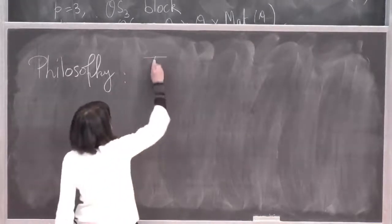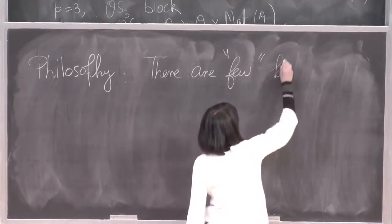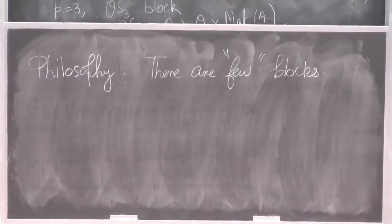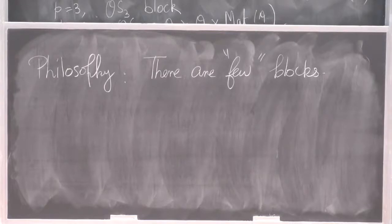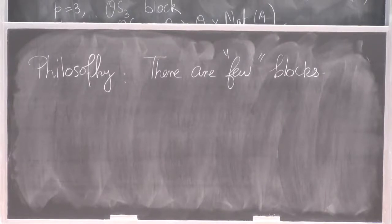The philosophy is that there are only a few blocks. 'Few' means different things to different people. In terms of representation theory: you can always find another block algebra of some other finite group which has a block that is a matrix algebra over the one you began with, so you can't control that. When I say few, I mean in terms of module categories.